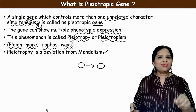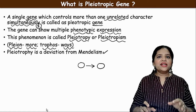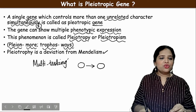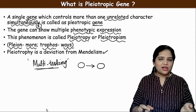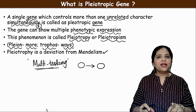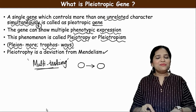To explain in a simpler way, we can call a pleiotropic gene a multitasking gene. Just as you can watch TV, eat, scroll your mobile, hear music, and chat with a friend all at the same time, similarly one gene at one time can control different characters in an organism — such a gene is called a pleiotropic gene.